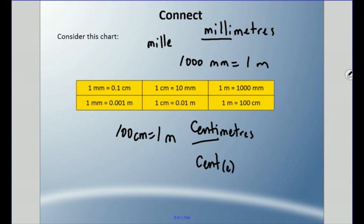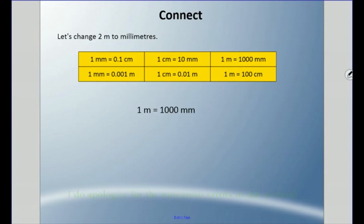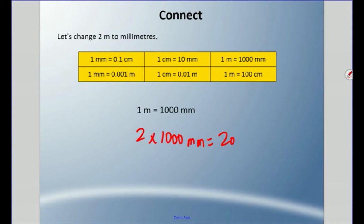Let's do some conversions together. Let's change two meters to millimeters. Since one meter equals one thousand millimeters, two times one thousand equals two thousand millimeters. So two meters equals two thousand millimeters.